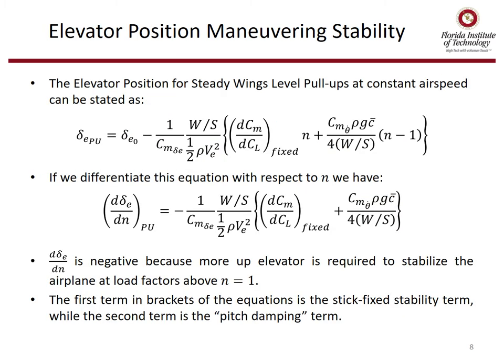Let's examine the equation for elevator position for a steady wings-level pull-up at constant airspeed. The elevator position at the pull-up is the elevator position for when CL equals zero — delta sub e sub 0 — minus some terms. Inside the brackets are two terms: the first is our static margin or longitudinal static stability term dcmdcl, which is the stick-fixed margin, multiplied by the load factor n. The second term is cm-theta-dot, the damping term, multiplied by n minus 1 and some other parameters.